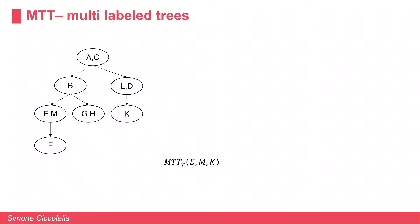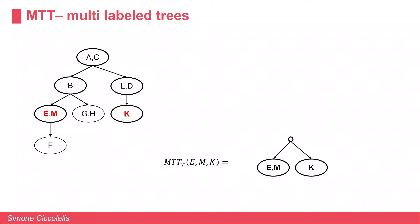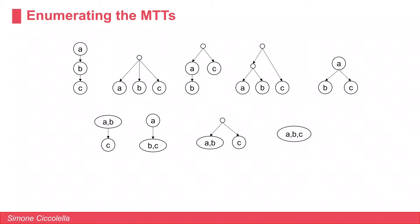The idea of the minimal tree topology here is very similar. The only difference is that it is possible that one or more labels of the triple are actually in the same node. For example, to find the minimal tree topology for the triple (e, m, k), where e and m are in the same node, the concept of building the topology is the same as before, and this is the resulting topology.